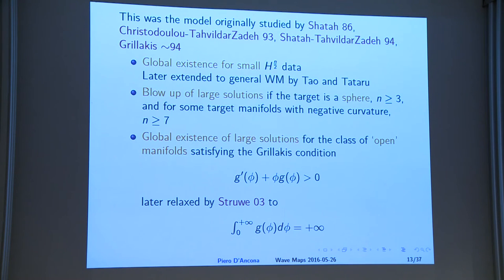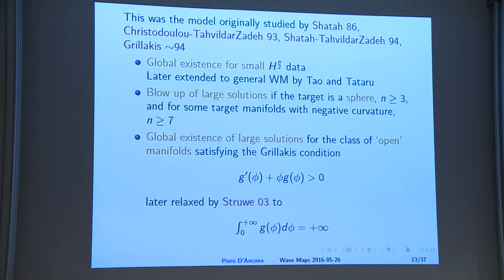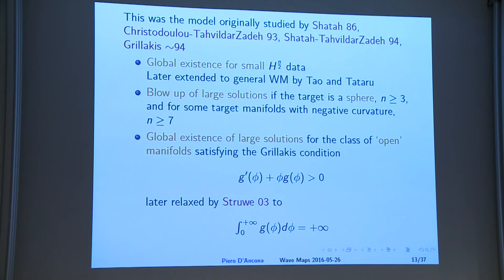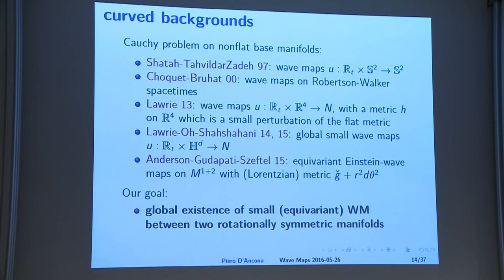This equivariant wave map equation was the first model considered, already in the 80s. The previous results apply: you still have global existence for small data. The blow-up results are known precisely for this model, and you also have global existence of large solutions provided the target is sufficiently open — this is the Grillakis condition on the metric — and it can be relaxed somewhat.